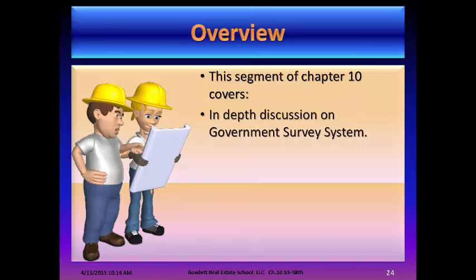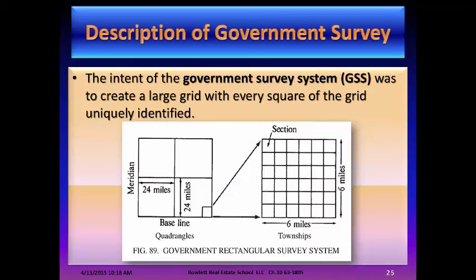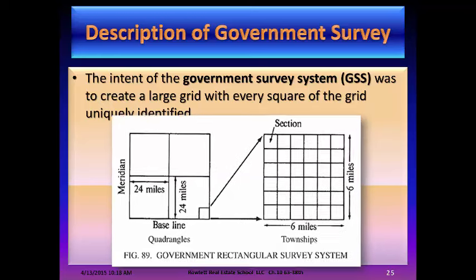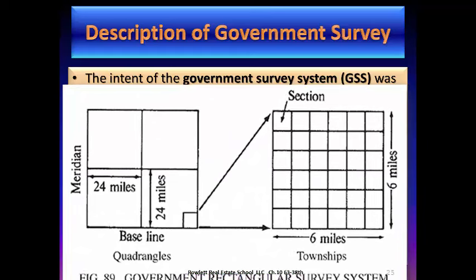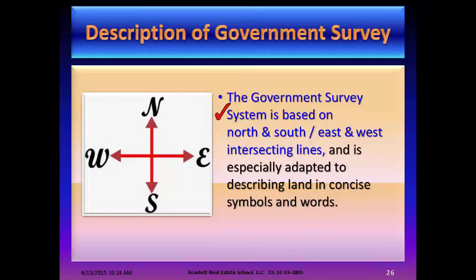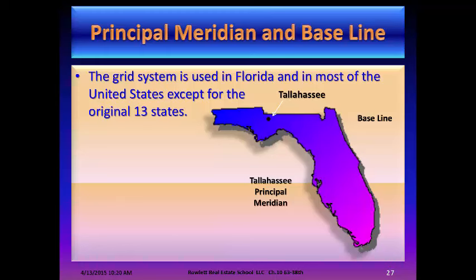This segment of Chapter 10 covers an in-depth discussion on the Government Survey System. The intent of the Government Survey System was to create a large grid with every square of the grid uniquely identified. The system is based on north-south and east-west intersecting lines and is especially adapted to describing land in concise symbols and words. The grid system is used in Florida and most of the United States, except for the original 13 states.